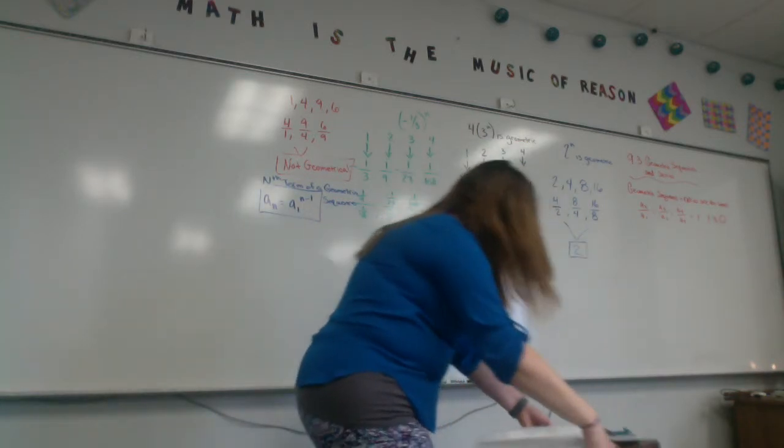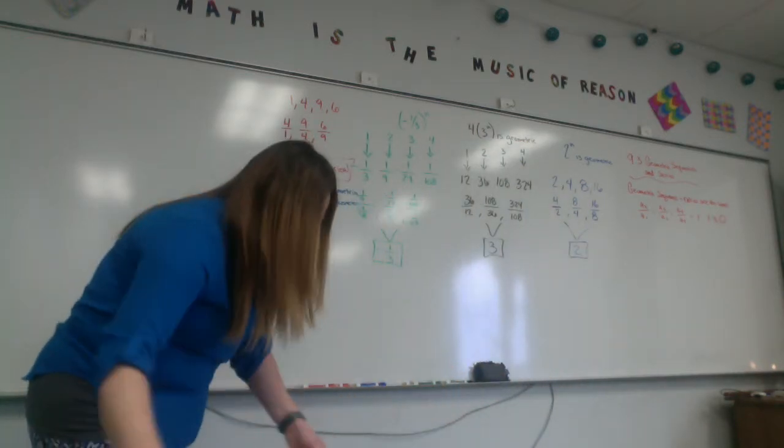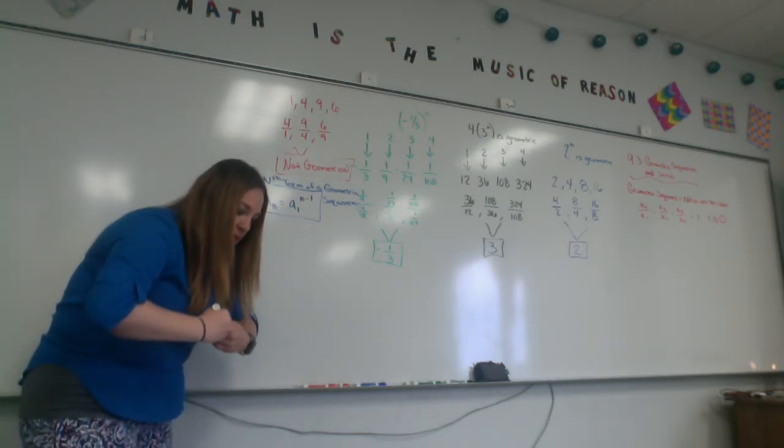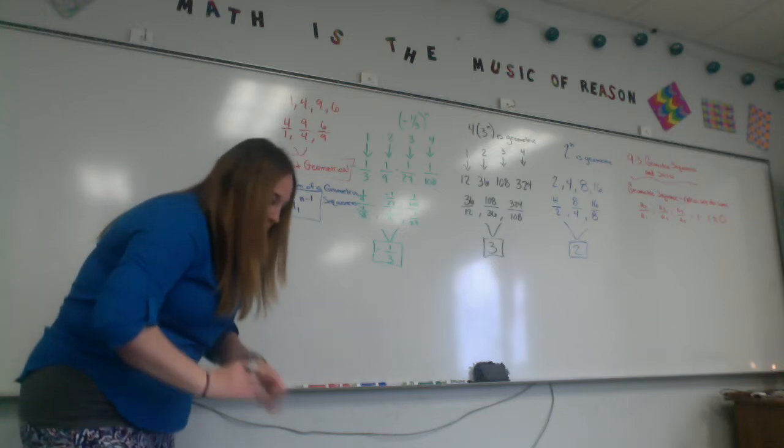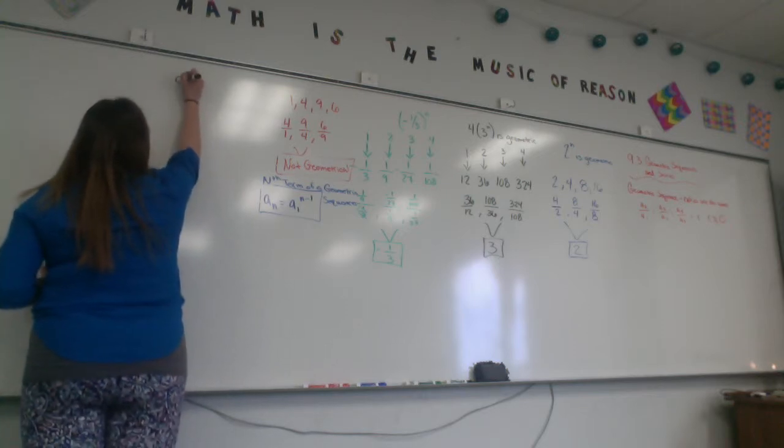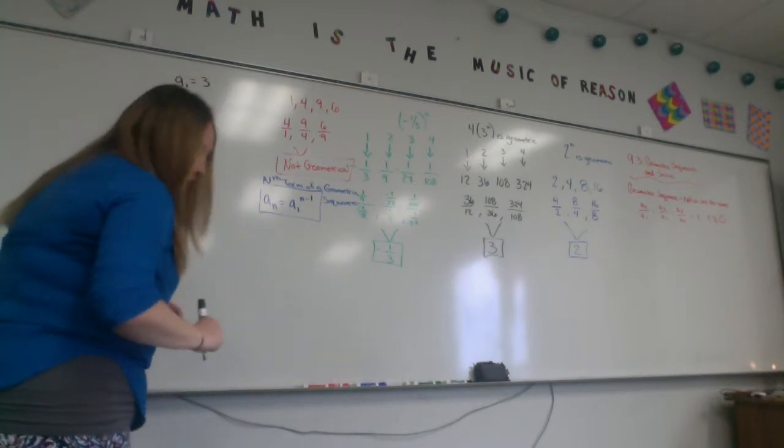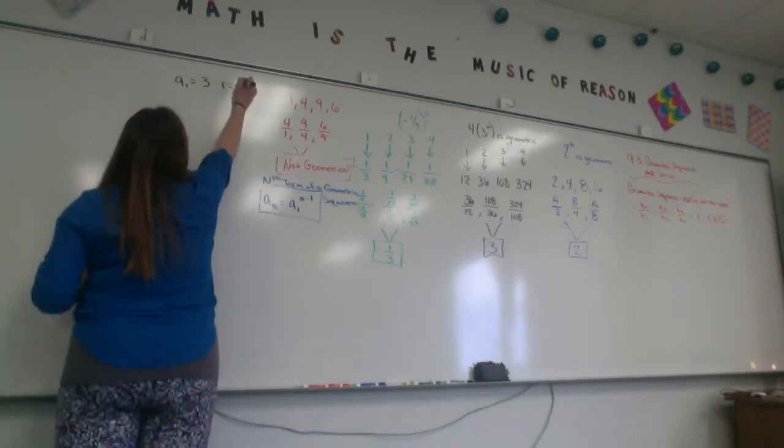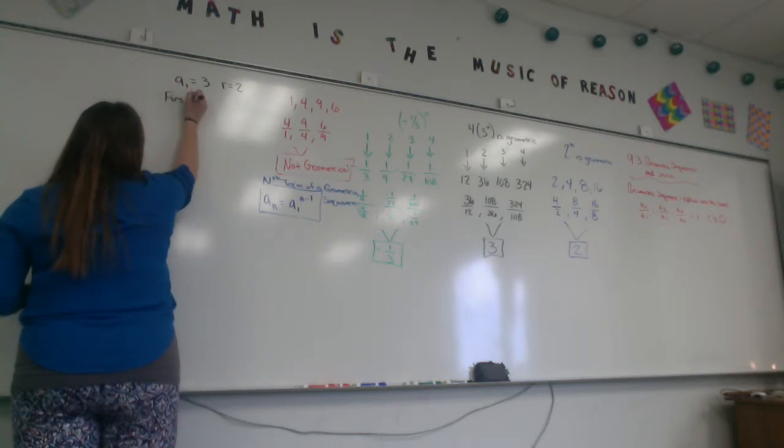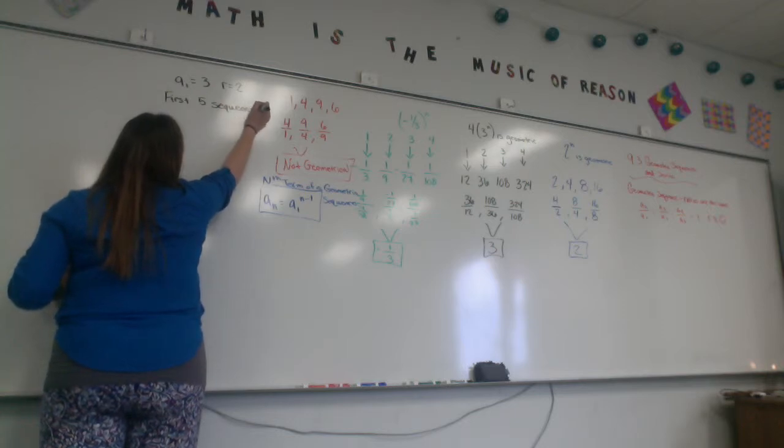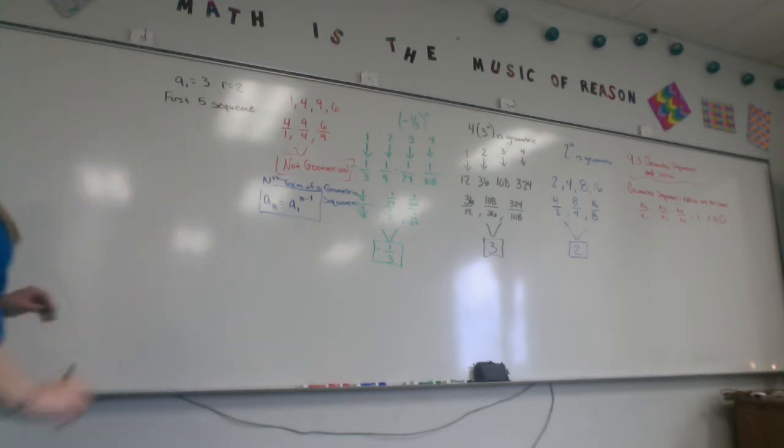It says, write the first 5 terms of the geometric sequence, whose first term is a1 equals 3, and whose common ratio is 2. Ratio equals 2. I want the first 5 sequence. If I want the first 5 sequence, and I have a1 equals 3, and the ratio equals 2, what do you think I'm going to do?